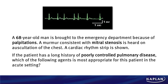So this question pops up to you on test day. First thing that you notice, we've got an EKG here. You've got to be familiar with them and be able to recognize the most common disorders that you can see. We've got a 68-year-old man brought to the emergency department because of palpitations — a fast heartbeat. A murmur is consistent with mitral stenosis. Notice these words that I've bolded for you — they won't be bolded on test day, but they're words that should jump out to you. That's an important thing. So this guy's got mitral stenosis heard on auscultation of the chest.